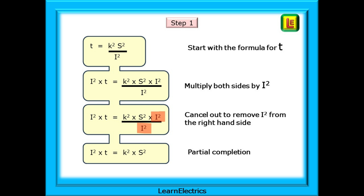In step 1, we start with the formula for T: T equals K squared multiplied by S squared, divided by I squared. As I squared is on the bottom as a division, let's move this first. To remove this division, multiply both sides by I squared, then cancel out to remove I squared completely from the right-hand side. This gives I squared times T on the left equal to K squared times S squared on the right.